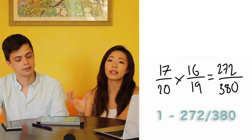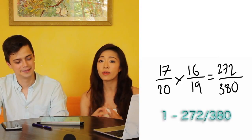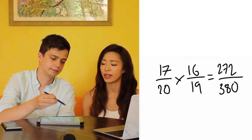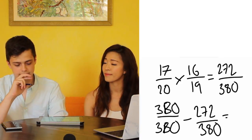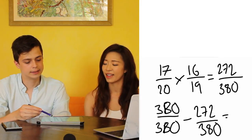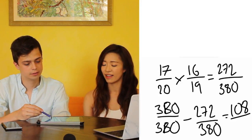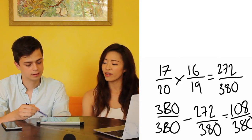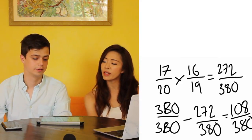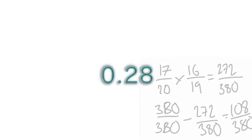So what you mean is one minus 272 over 380, because 272 over 380 means the two horses are not placed in the top three, but we do want the horses to be placed in the top three. So that gives us 108 over 380, which is roughly a probability of 0.28.